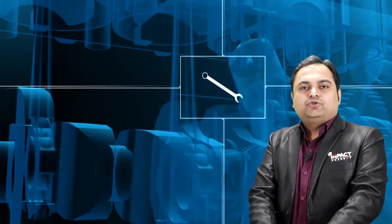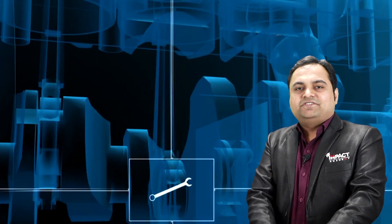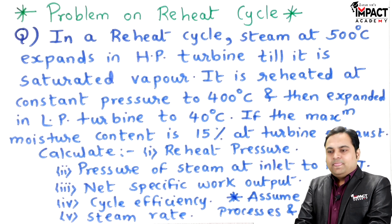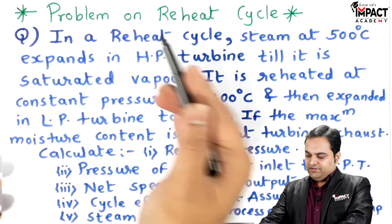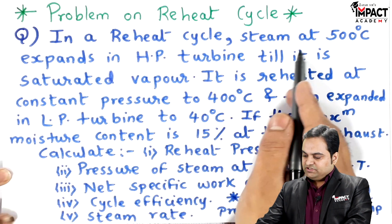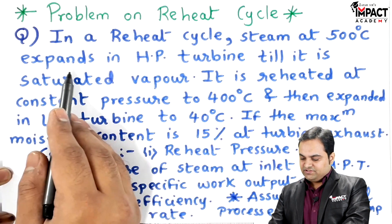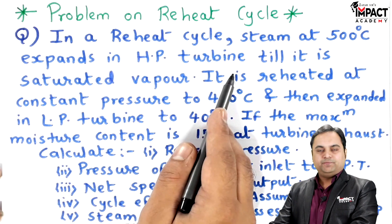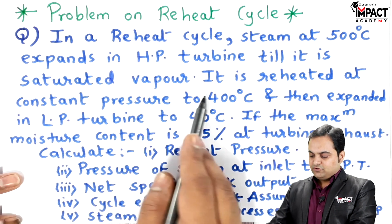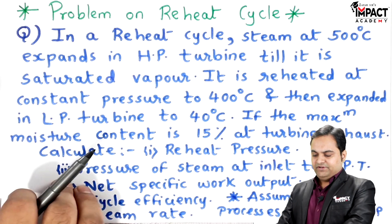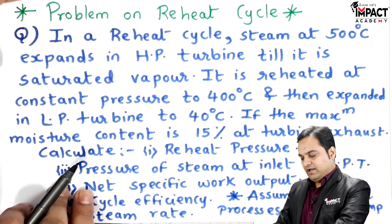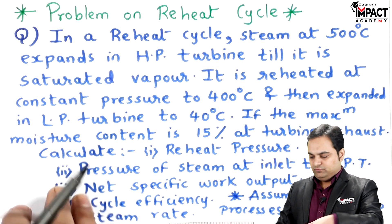Hi friends, in this video I'll be explaining a problem on reheat cycle. Here is the question: in a reheat cycle, steam at 500 degree Celsius expands in the HP turbine till it is saturated vapor. First I'll explain the reheat cycle with the help of a layout and write the data on that layout.